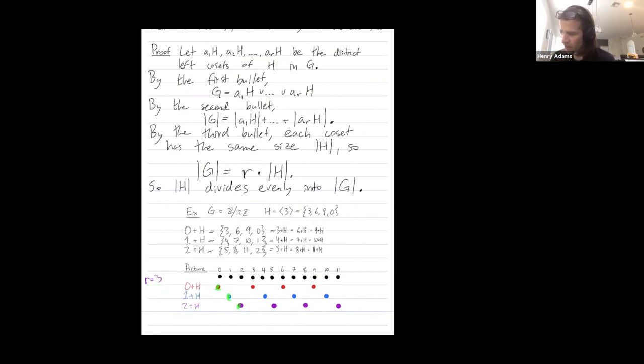Every element is in at least one coset. So the various cosets contain the entire group. That's what this is saying. The three cosets contain the entire group.